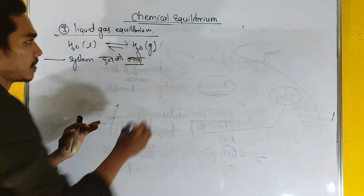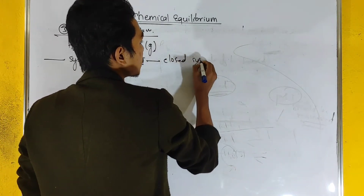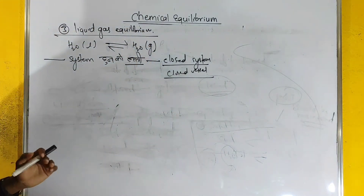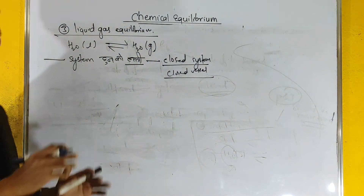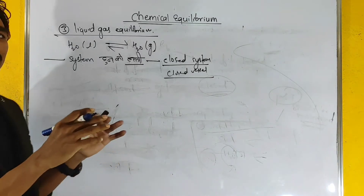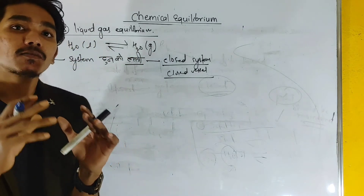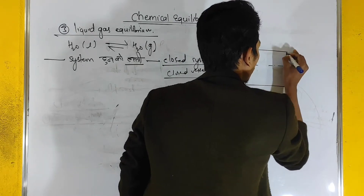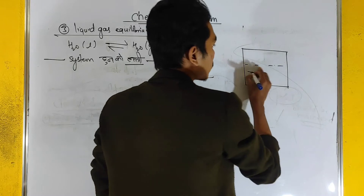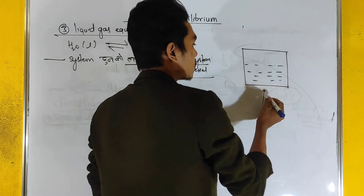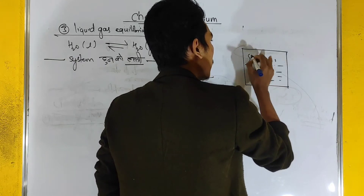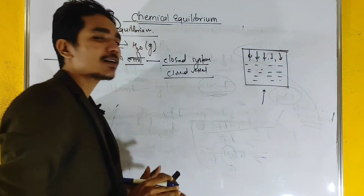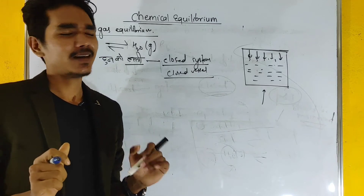There must be a closed system. In a closed vessel, for example, liquid water is heated in a closed system. Heat energy is exchanged — thermodynamics — and temperature increases, leading to vapor formation. The vapor exerts pressure, and equilibrium is set up.